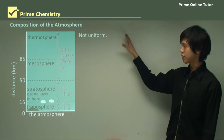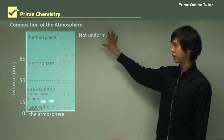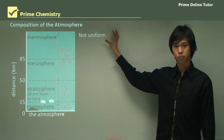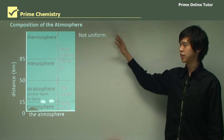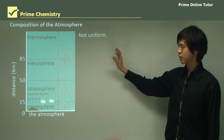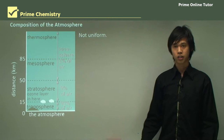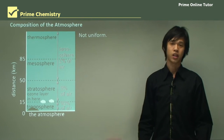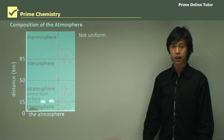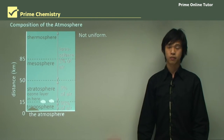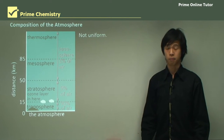The first thing to note about the atmosphere and its structure is that it's definitely not a uniform object. For instance, if you look at the ocean, the ocean is not uniform, neither is the surface of the Earth. So likewise, the atmosphere is not likely to be a uniform structure either.